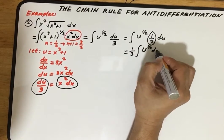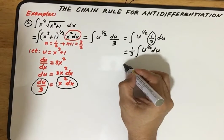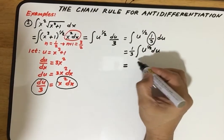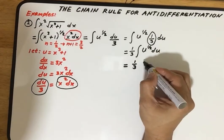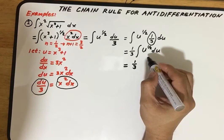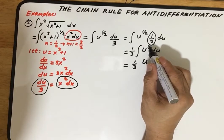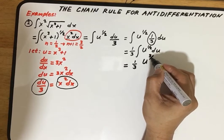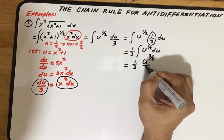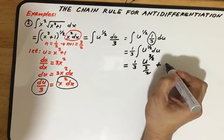This is now in the form of the power formula. Using the power formula, we have one-third times u to the n plus 1 over n plus 1. N plus 1 is three halves, so u to the three halves over three halves plus c.